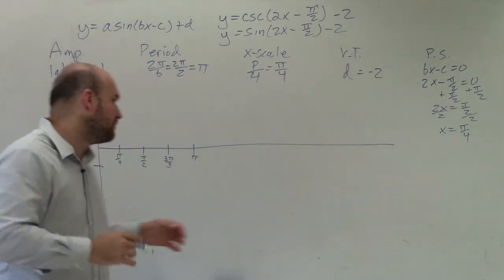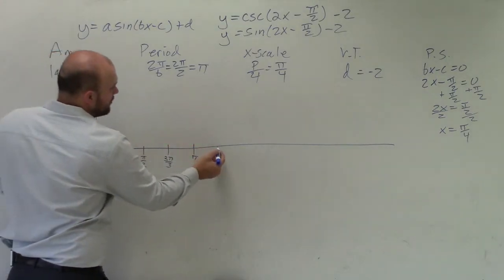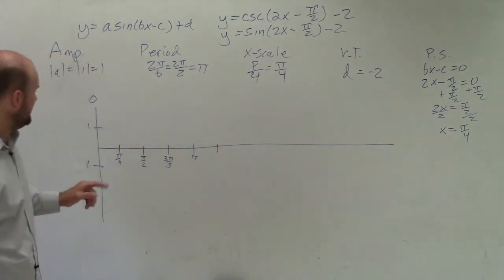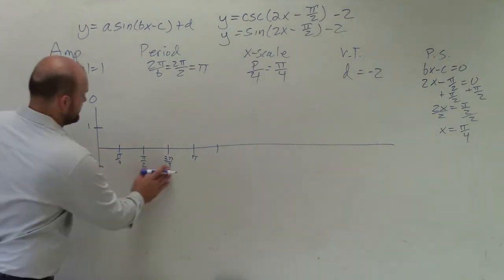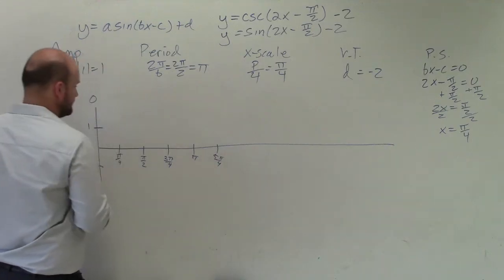However, remember, we're not starting at 0. We're starting here. So therefore, I need to add one more x scale over there. So that would be pi over 4. Oh, I'm sorry. That's 3 pi over 4. This would be 5 pi over 4.